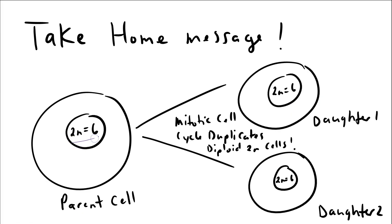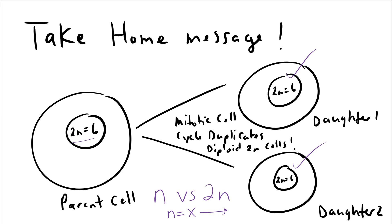Daughter cells have a 2N of 6, just like the parent cell — that's a big take-home message. The parent cell started with 2N equals 6, all genetic material is doubled to 12 sister chromatids, and those 12 are separated so half go into each daughter cell. You should know the difference between diploid and haploid, between somatic and gametic, and understand the relationship between N and 2N. I hope that helps — see you next time!